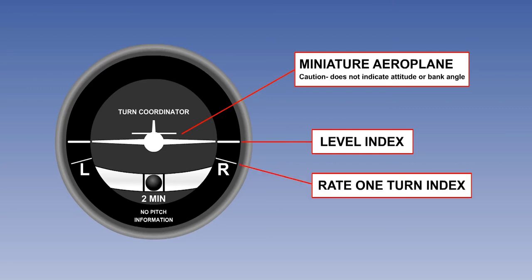When the miniature aeroplane's wingtip is against either of the rate one indices, the aircraft is turning at rate one, or three degrees a second. A reminder of rate one is below the ball, two min referring to the fact that a full 360 degree turn at rate one takes two minutes.